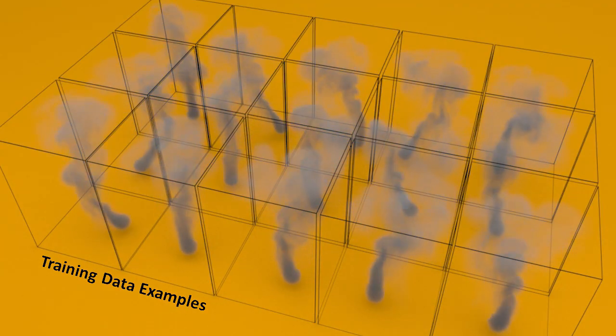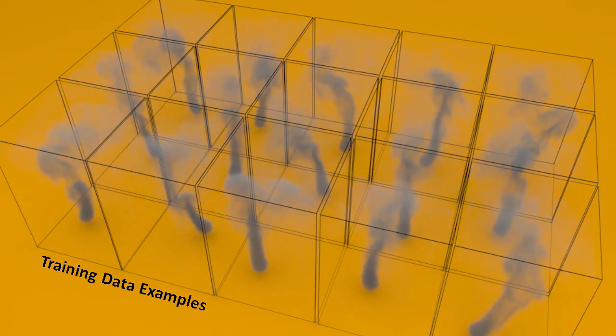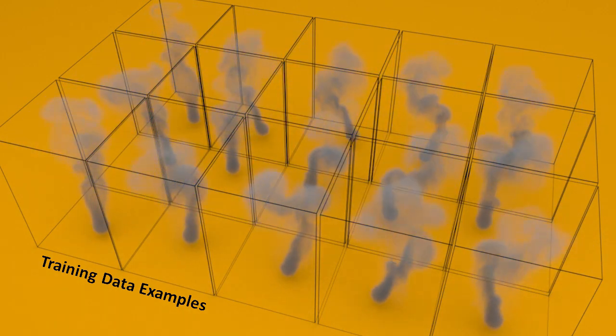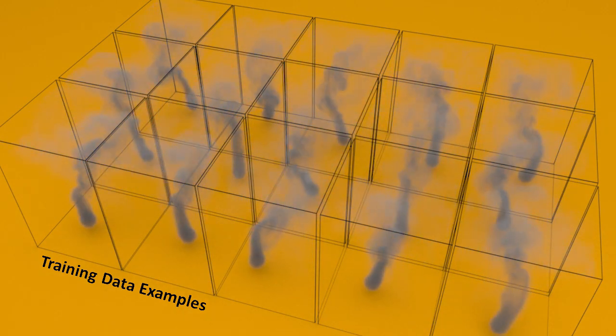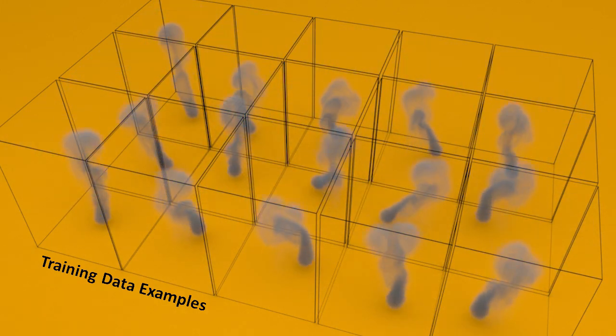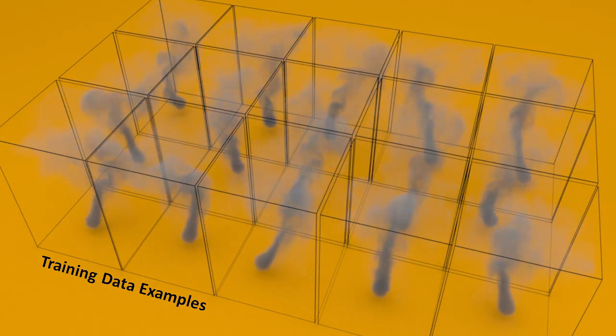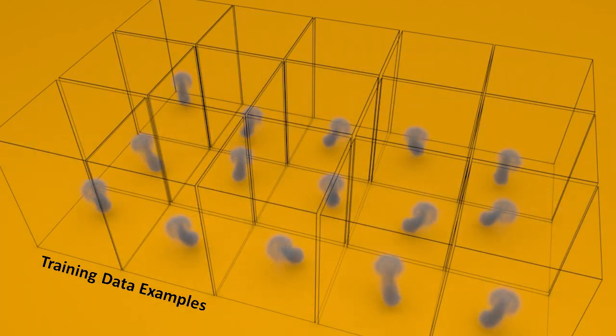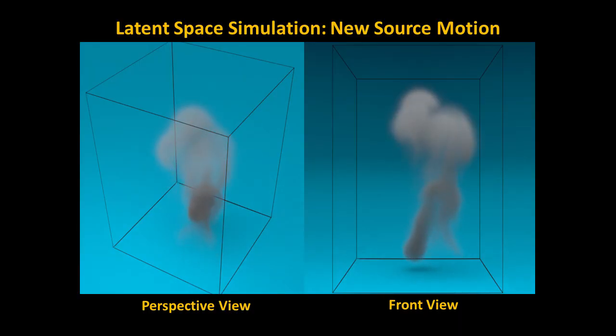Our approach is able to handle extended parametrizations. For an arbitrarily moving smoke source, we constructed a training dataset with smoke sources moving randomly on the X-Z plane as shown on the video. Then, our approach is able to synthesize a trajectory that is not present on the original dataset.